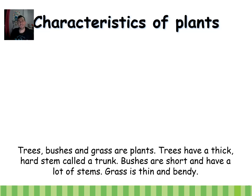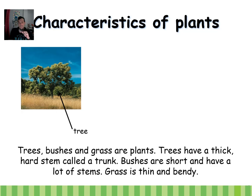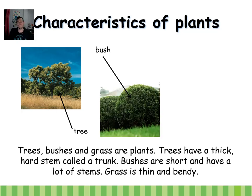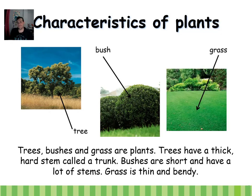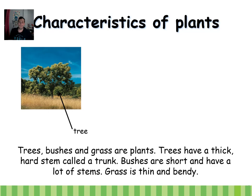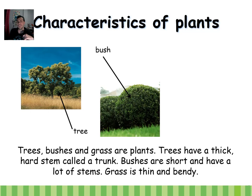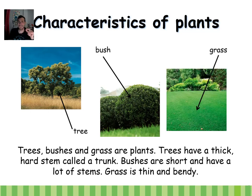We are going to talk about the three different plants according to their size. We've got trees, bushes, and grass. The biggest of those are the trees. The medium size is the bush, and the smallest is the grass.